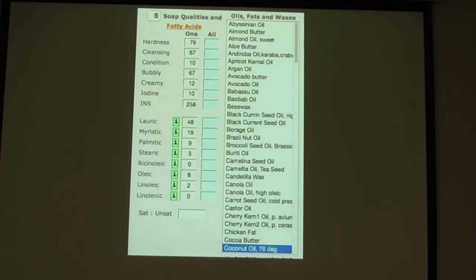This is coconut oil then. Extremely highly cleansing. With 48% lauric acid, 19% myristic acid. Fairly low levels of everything else. So it's highly saturated, highly cleansing. And often mixed with other oils to improve the cleansing or the hardness of the soap. It's also fairly hard by itself there. It's at 79.